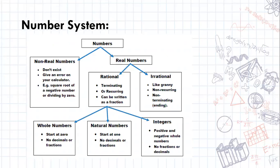So the number system is broken up into non-real numbers and real numbers. Non-real numbers don't exist so those are the ones that will give us an error on the calculator. So for example the square root of a negative number or trying to divide by zero.